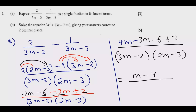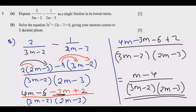Simplifying: 4m minus 3m is m, and negative 6 plus 2 is negative 4. So we end up with m minus 4 over (3m minus 2)(2m minus 3). Once you do that, you are good to go and you get these three marks.